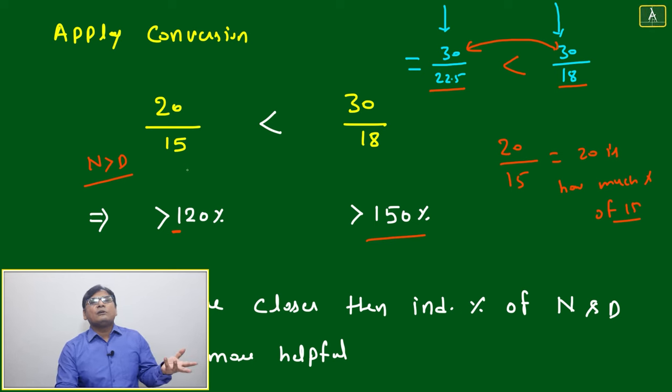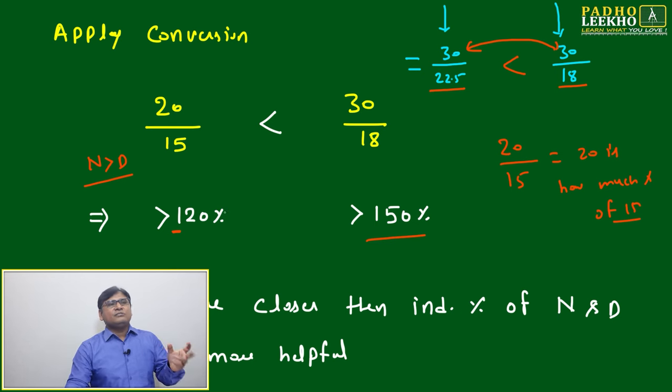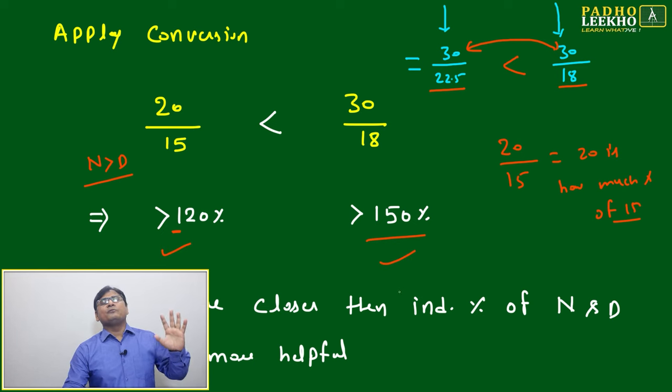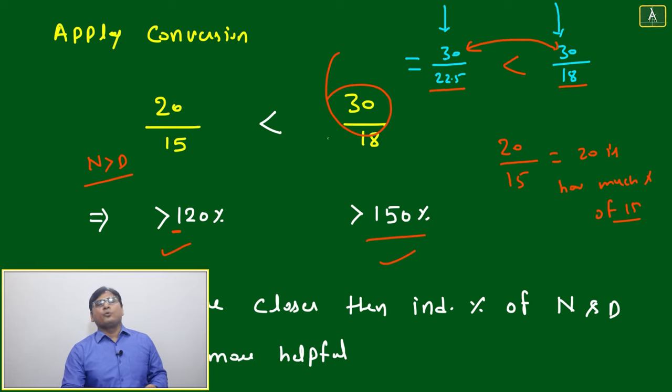20 by 15 will become exactly 133%, but we are not calculating exact here. Just by looking at the digits, we can say this will be more than 120%, this will be more than 150%. Which one will be more? This one will be more, just by looking itself. But this will be applicable if the change is having a wide gap.